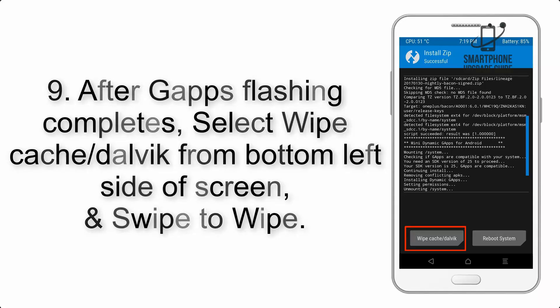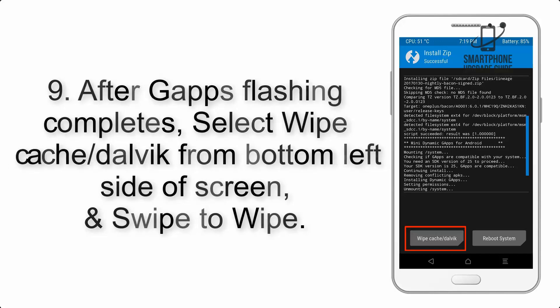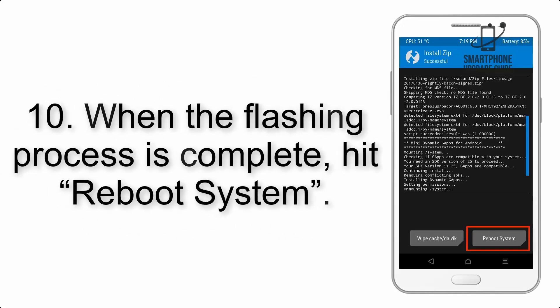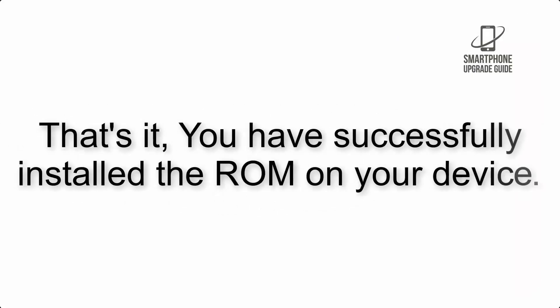Step 8: Flash the GApps zip package in the same manner. Step 9: After GApps flashing completes, select Wipe Cache and Dalvik from the bottom left side of the screen and swipe to wipe. Step 10: When the flashing process is complete, hit Reboot System. That's it — you have successfully installed the ROM on your device.